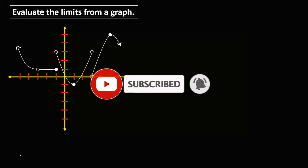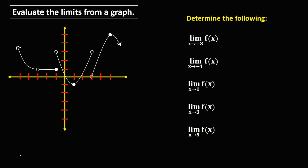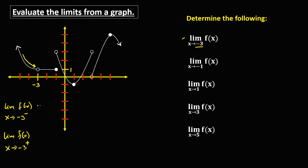So let's have this problem. Given this graph, we need to find the values for these limits — the limit of f of x as x approaches negative 3. From this graph, this is x = negative 3. To find the limit of f of x as x approaches negative 3 from the left, and also the limit of f of x as x approaches negative 3 from the right. As x approaches negative 3 from the left, the limit is equal to positive 1.